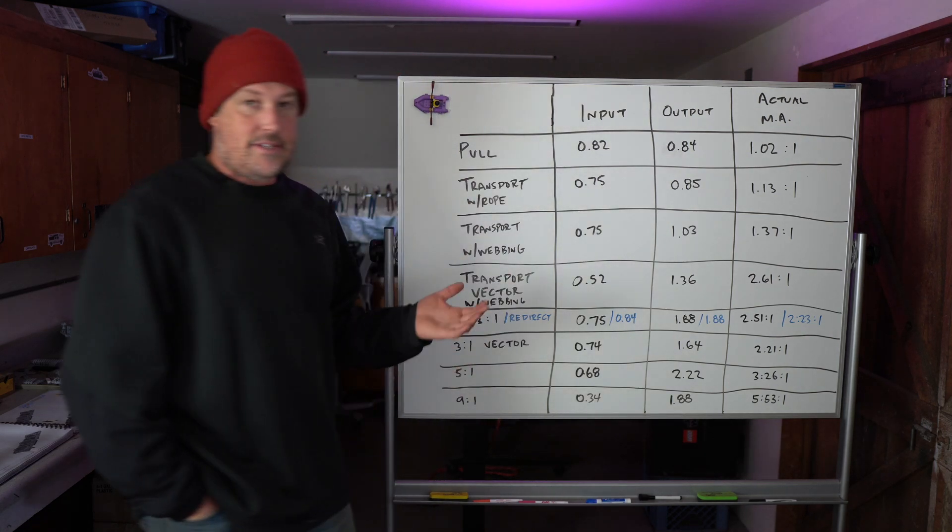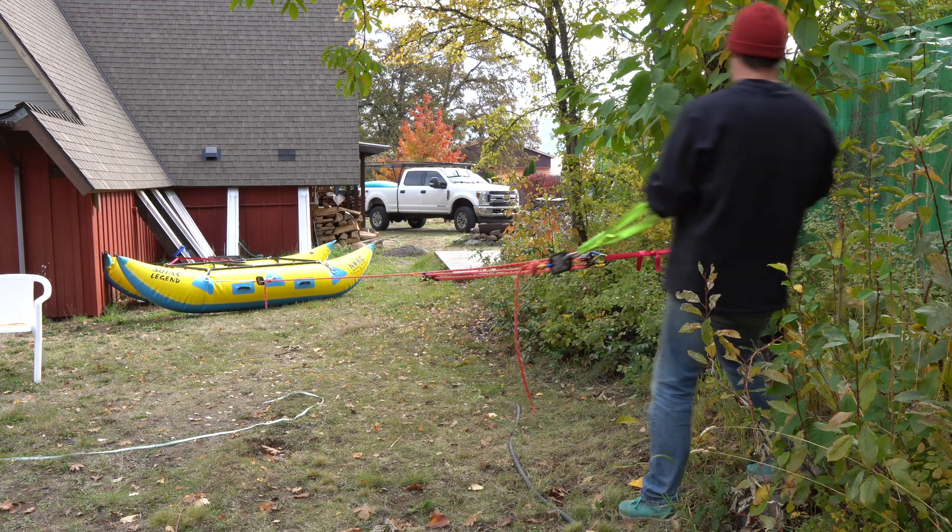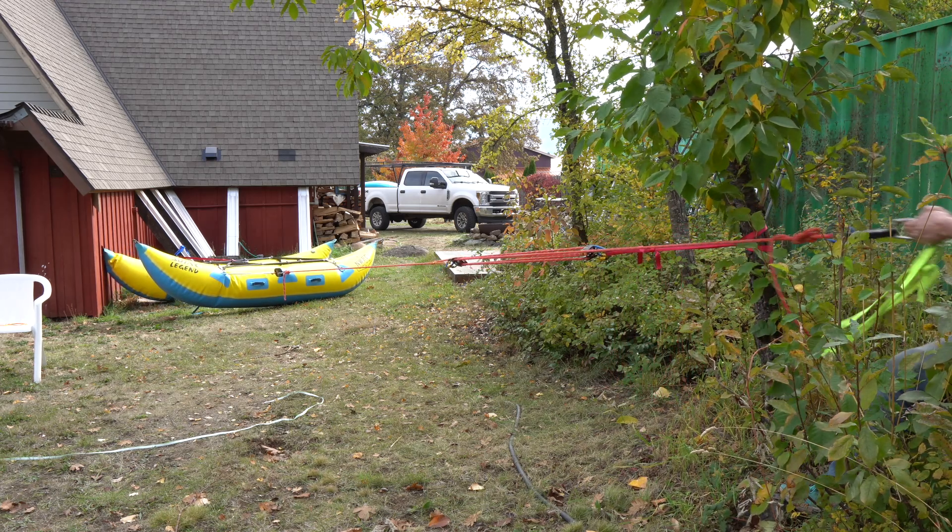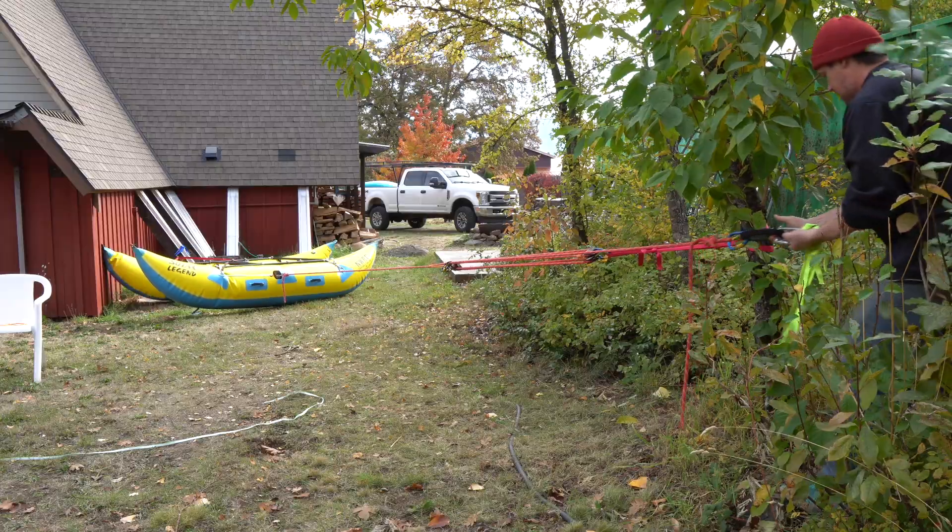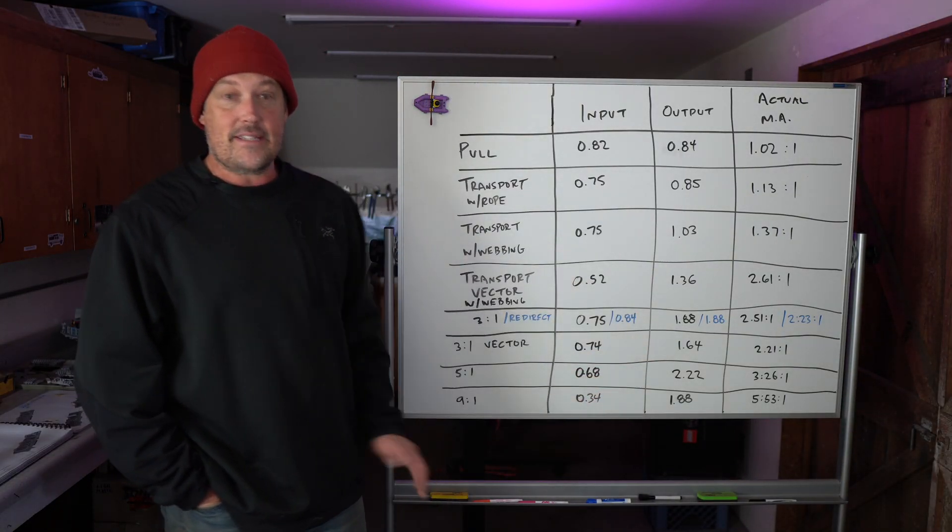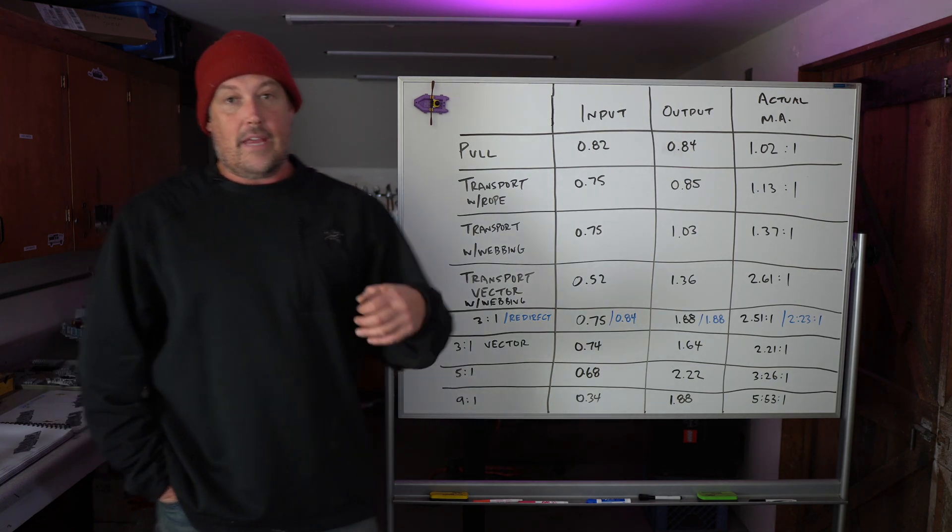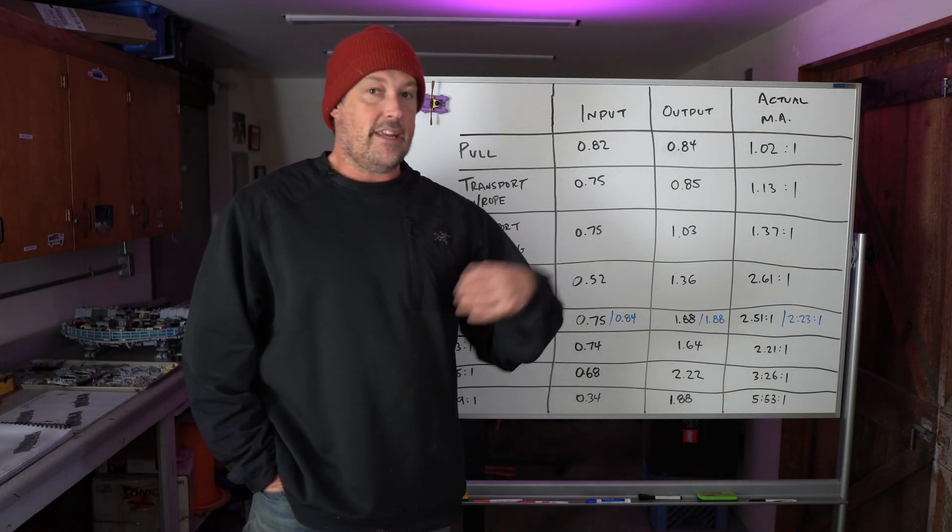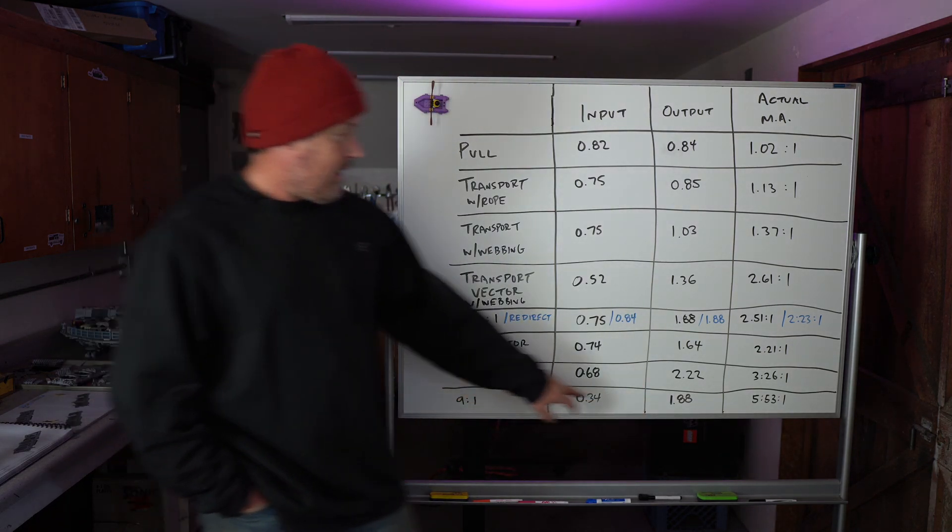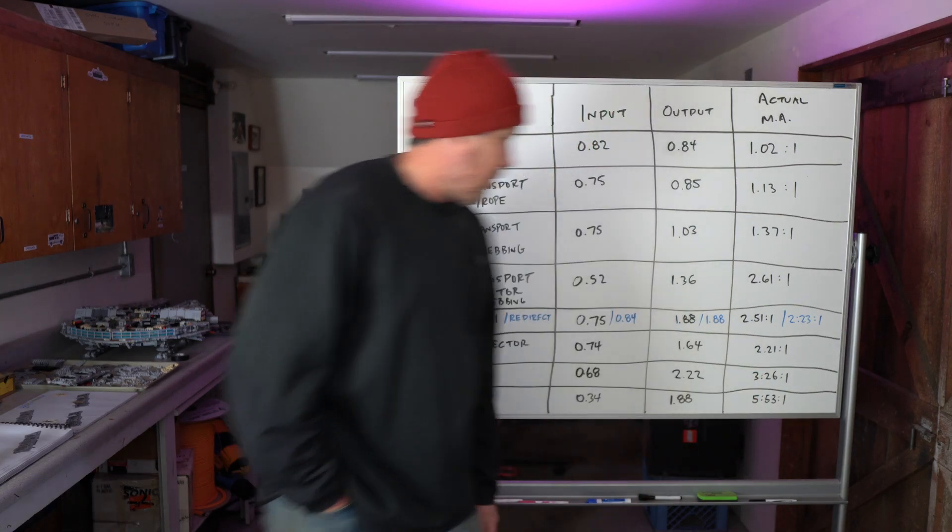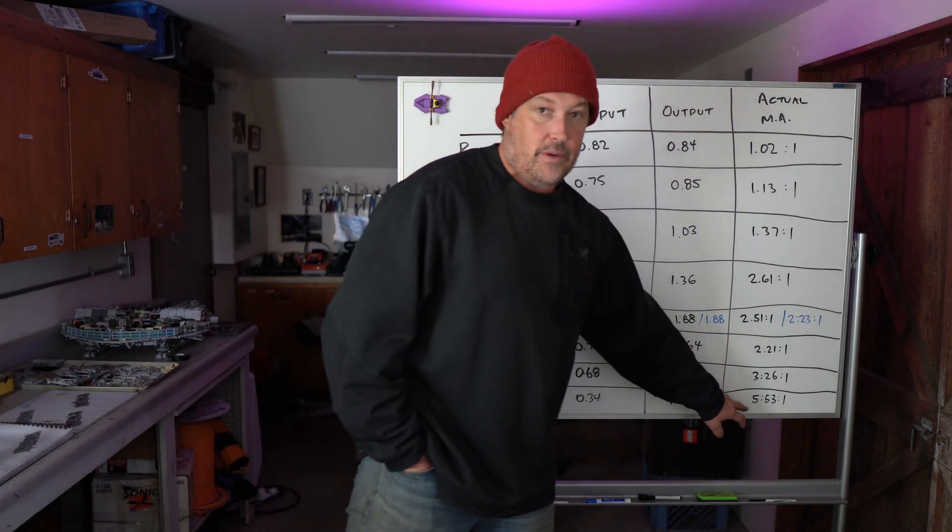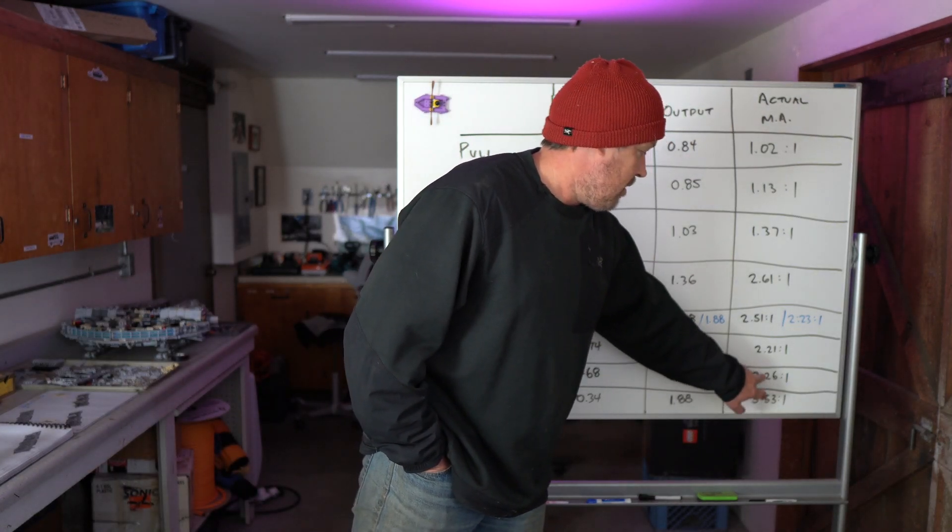And then just out of curiosity, I did the 5 to 1 and 9 to 1. And I want to be really clear, I'm not an advocate for the 5 to 1 or 9 to 1. I think if you're by yourself, if you're with a group of two people, maybe use these. Sometimes I go boating with just one other person and I need mechanical advantage. I can see using these. These are good things to have in your back pocket if you're with small groups. But if you have plenty of people pulling, the forces generated on these are pretty big. So with a 5 to 1, I got 3.26 to 1 real mechanical advantage, which isn't that much more. And with a 9 to 1, I got 5.53 to 1. And I could feel the difference.